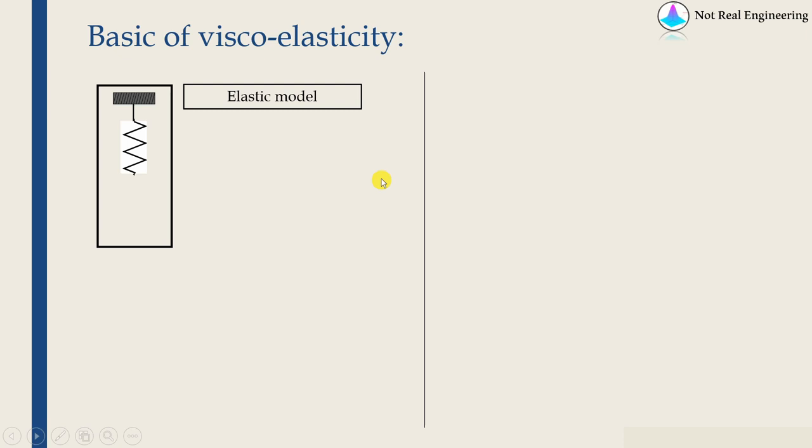We all know what is elastic material. An elastic material can be represented by a spring and it obeys Hooke's law. So this is the simplest form of Hooke's law where stress is directly proportional to strain.